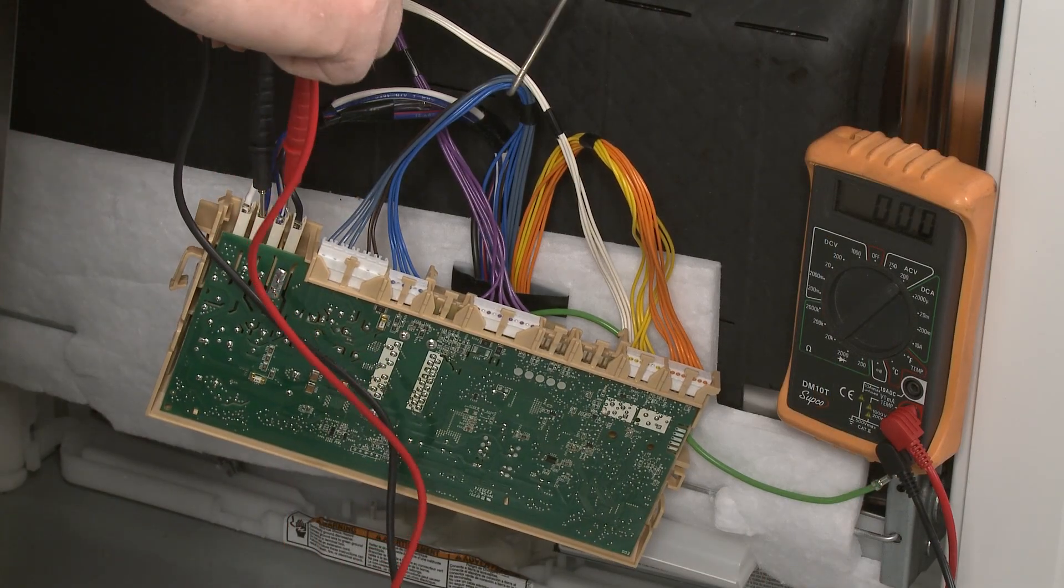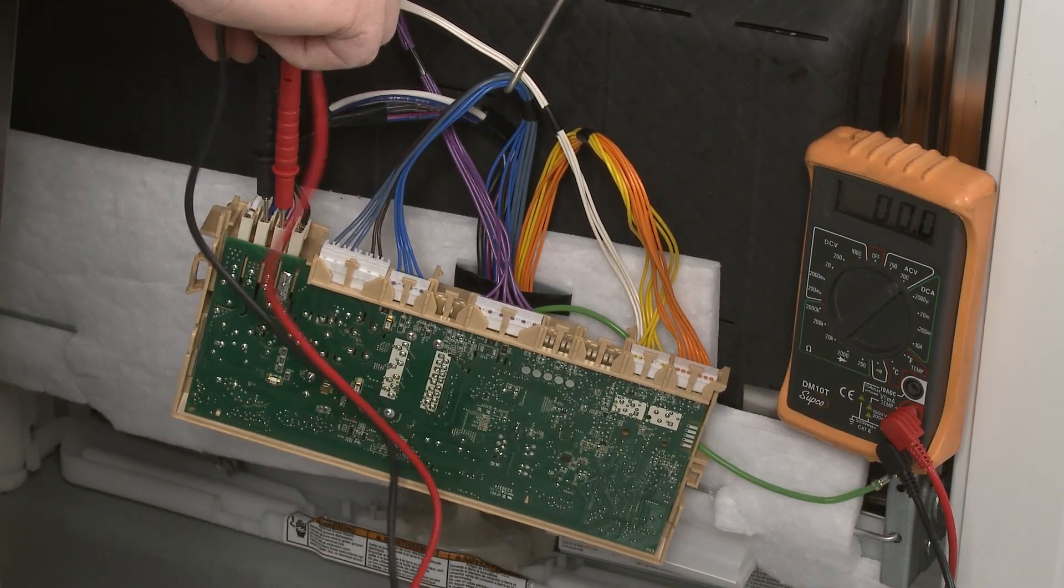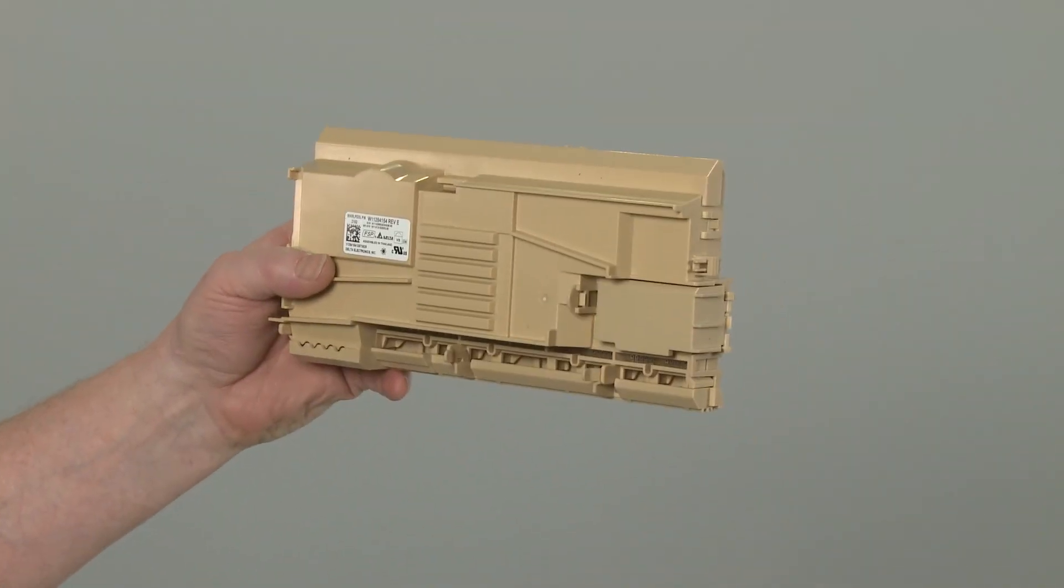If the control board is not providing sufficient voltage to the flow-through heater, then a new control board will need to be installed.